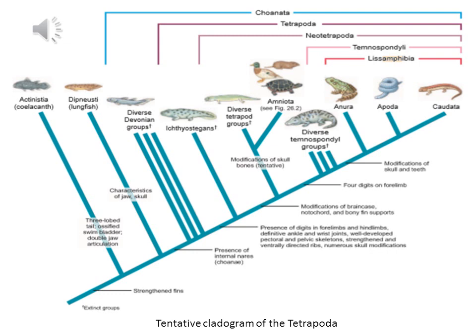This was the evolutionary perspective of amphibians. You can see that the early amphibians were in the non-amniotic lineage, while the modern amphibians are in the amniotic lineage. If you have any questions, you can ask. Thank you.